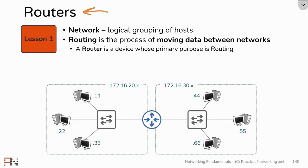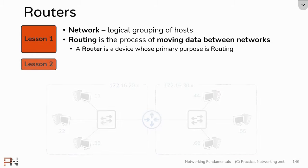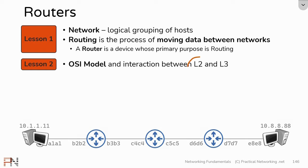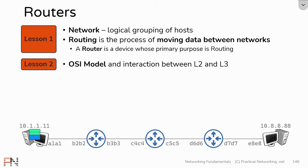A router, which is going to be the focus of today's lesson, is simply a device whose primary purpose is routing. Then in Lesson 2, we discussed the OSI model. We used this illustration to discuss the interaction of Layer 2 and Layer 3. We showed you that for this host to send some data to this host, it would start by adding a Layer 3 header, which included a source and destination IP address of the two endpoints of the conversation. Then a new Layer 2 header is added to facilitate each hop along the path between the two endpoints.